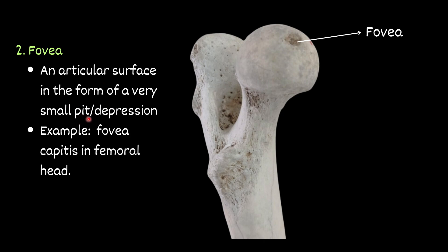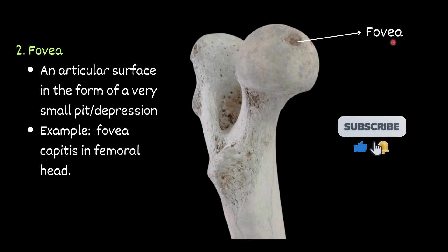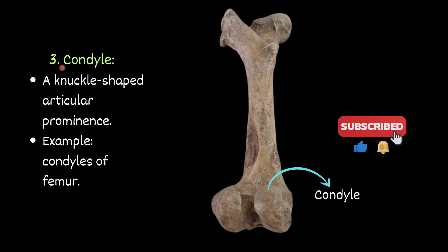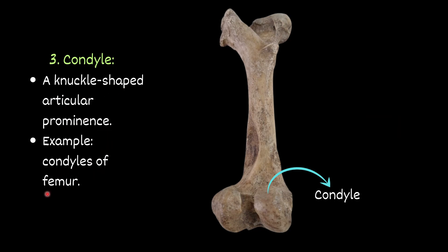Then fovea — an articular surface in the form of a very small pit or depression. For example, fovea capitis in the head of the femur. You can see this is the head of the femur, and here you will find a small pit-like depression. This is called fovea, or fovea capitis of the femur.